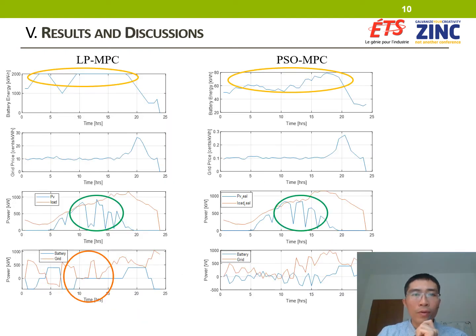The figure illustrates the simulation results using PSO-MPC in comparison with linear programming MPC. As we can see, the battery level when using LP-MPC almost stays at the maximum level, while the PSO-MPC only charges up to nearly maximum level right before the peak hour when the price and load are the highest.